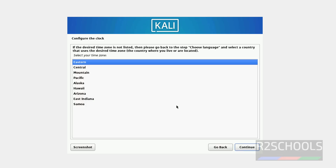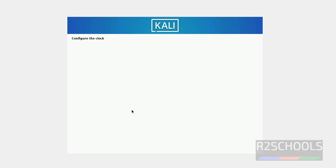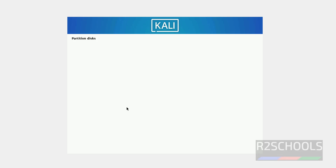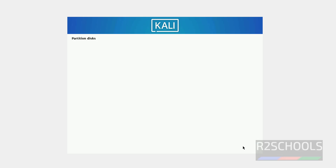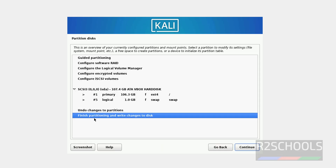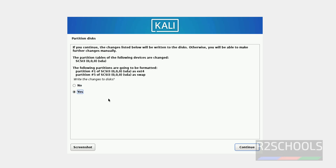Click Continue. Select the clock timezone — I'm going with Eastern. Click Continue. For partitioning, select Guided - use entire disk and click Continue. Select the disk and click Continue. Then select Finish partitioning and write changes to disk, click Continue, select Yes, and click Continue.